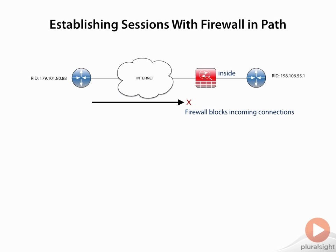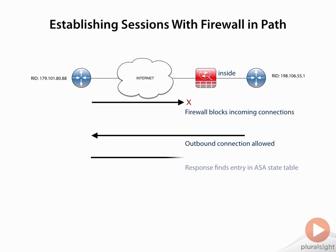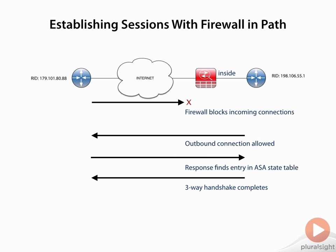Let's look at the router from the inside perspective. If it sends an outbound connection, most of the time with our firewall configuration, that's going to be allowed because this is a TCP session. Now the response back to that outbound connection will find an entry in the state table, and that three-way handshake can complete.